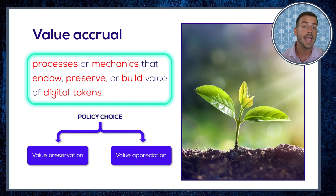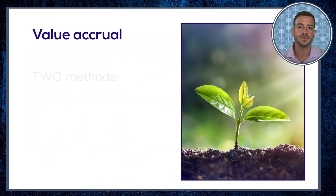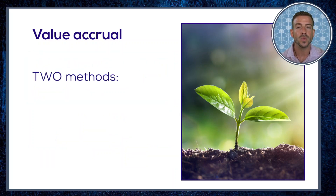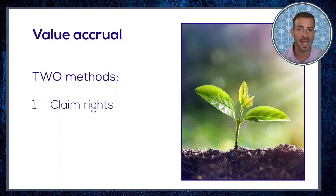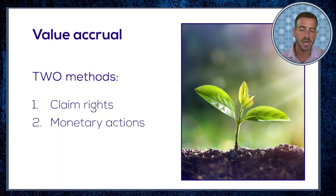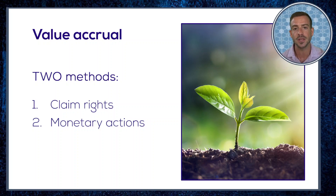A project may pursue different policies during different phases of development or under different economic conditions, and those policies can be chosen at free discretion by authorities, by shared governance process, or else be coded up as a blockchain-secured rule using smart contracts. There are two broad methods for engineering value accrual: we can assign claims rights to our digital assets, or we can take monetary actions that change their scarcity in relation to a value pool that they have a claim to.